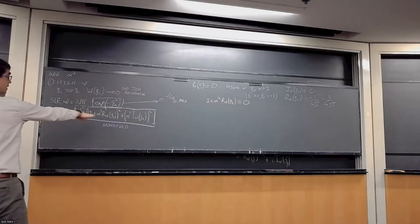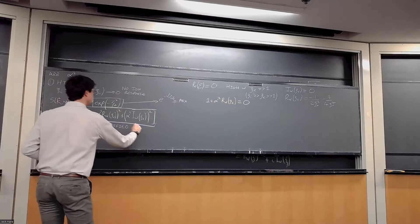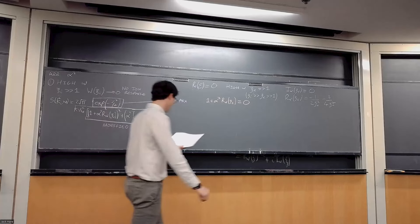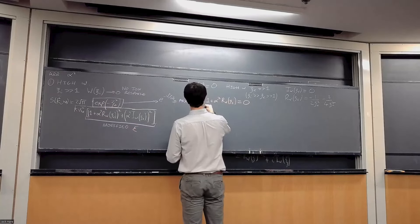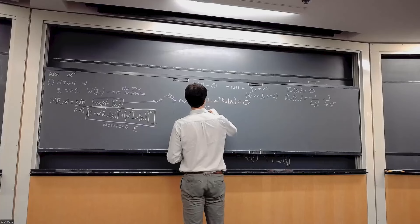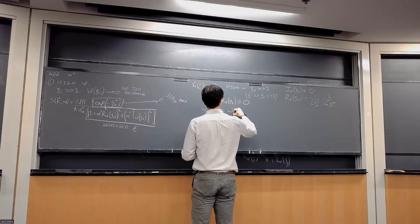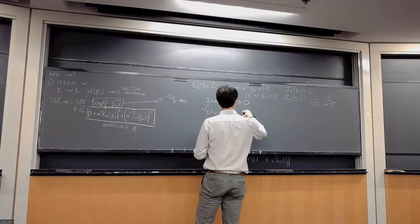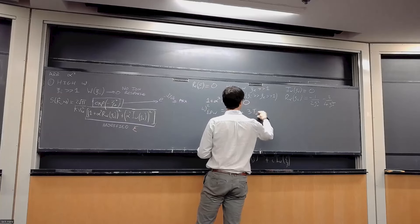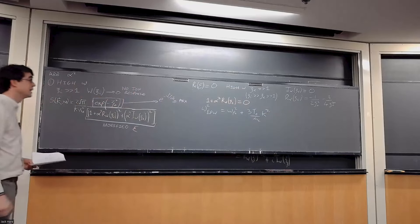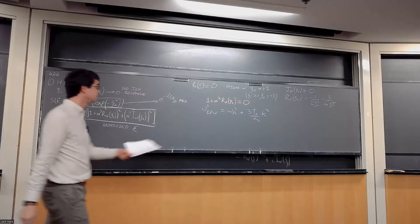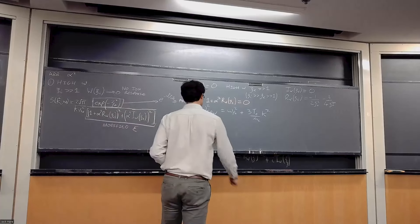Solving the resonance condition gives the dispersion relation: ω²_EPW = ω²_pe + 3(Te/me)k². We have recovered from all this complicated mathematics the electron plasma wave dispersion relation. So our S(k,ω) at high frequencies is going to have very sharp peaks in it, occurring at the electron plasma wave frequency and at the negative of that frequency.